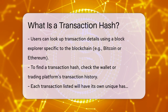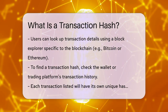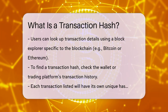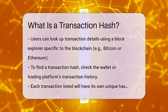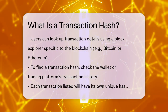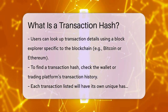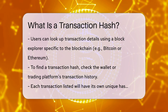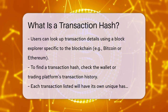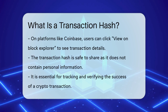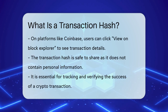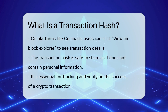To find your transaction hash, you usually go to your wallet or trading platform's transaction history. There, you'll see a list of your transactions and each one will have its unique hash. On platforms like Coinbase, you can select the transaction and click 'View on Block Explorer' to see all the details.